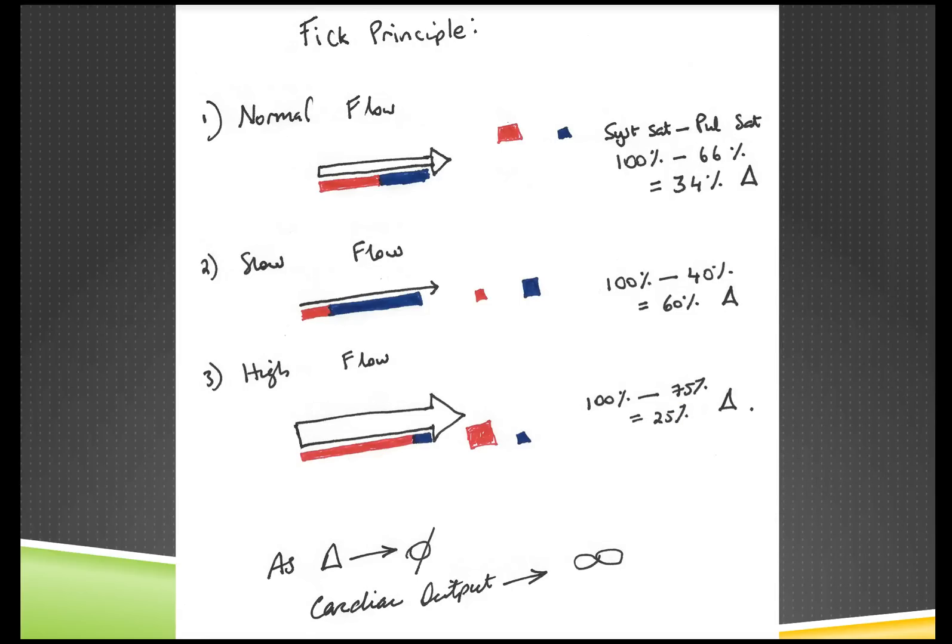This diagram is meant to explain to you the principles behind Fick. What we have here is normal flow. As blood goes through an organ bed it gives up its oxygen, so it goes from red to blue. If the blood is moving very slowly, there's more time for each red cell to give up its oxygen so the blood becomes more blue. On the other hand, if you have high velocity and high cardiac output, the red cells move quickly and there's less time for gas exchange, so the blood is less blue at the end of the gas exchange.